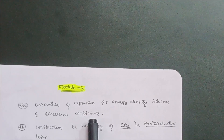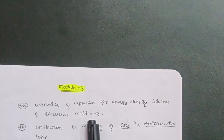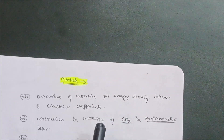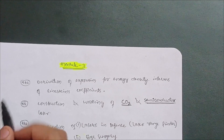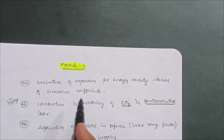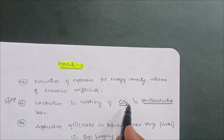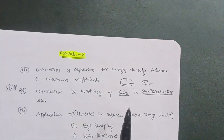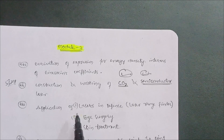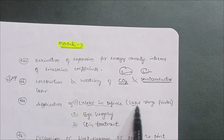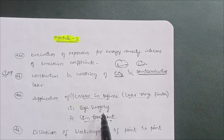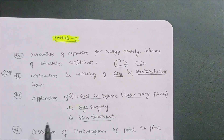For Module 3 on Lasers: the construction and working of the CO2 laser is the most super important question in this module. Sometimes they ask the construction and working of the semiconductor laser instead, so focus on both CO2 and semiconductor lasers. Also cover applications of lasers in defense, laser rangefinder, eye surgery, and skin treatment — these three application areas are important to write about.